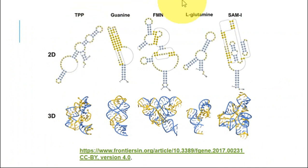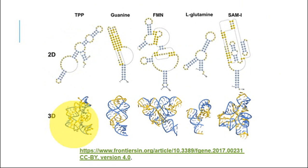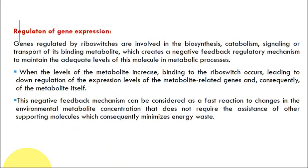These are the various structures of the riboswitches of thiamine pyrophosphate, guanine, flavin mononucleotide, L-glutamine, and S-adenosylmethionine. Here the representation is given in 2-dimensional and 3-dimensional conformation. Usually these are small in size and are located either at the 5' untranslated region, 3' untranslated region, or sometimes within the introns of the pre-mRNA transcripts.